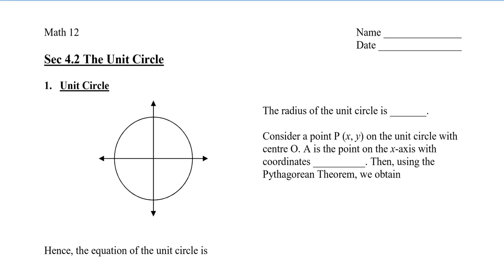The unit circle means that the radius of the circle is 1. We're going to consider a point P with the coordinates x, y on the unit circle. The center is the origin, so we're going to label that O. Now I'm going to connect these two points, and we know that this length is 1 because it's a unit circle. Point A is going to be on the x-axis right here, so the coordinates of A are x, 0. The vertical height of this right triangle is going to be y — hence the point P has coordinates x and y.